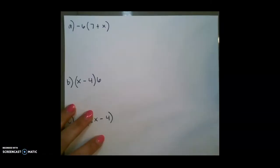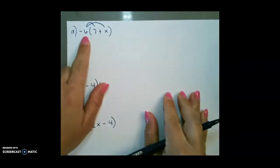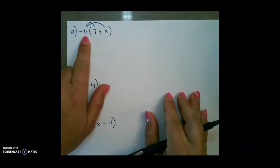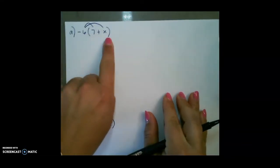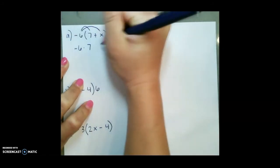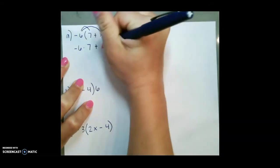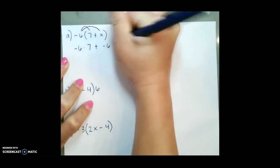Now let's look at a couple of examples. For our first example, we have negative 6, parentheses, 7 plus x. So again, we want to distribute or multiply the number or variable on the outside to everything inside the parentheses. So that would be negative 6 times 7, plus sign in the middle, and negative 6 times x.